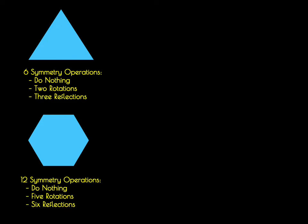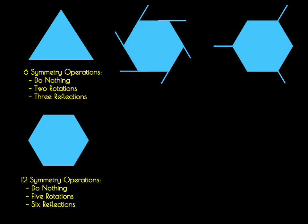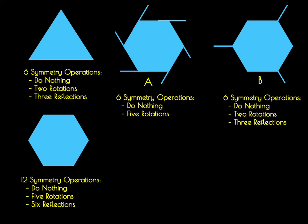We can lower the symmetry of that hexagon by placing some lines on it. So for example, we can generate these two different hexagons, one that has 6 lines on it and one that has 3. To differentiate these two, I'm going to label them A and B. We can now ask ourselves the question, how much less symmetric are these hexagons than the one that we just explored, and how do their symmetries correspond to the triangle? Well, hexagon A has 6 symmetry operations, a do nothing operation, and 5 rotations. Placing those 6 lines at the vertices has eliminated those mirror planes. Hexagon B also has 6 symmetry operations, a do nothing operation, 2 rotations, and 3 reflections.